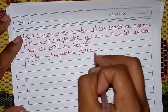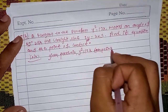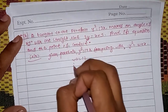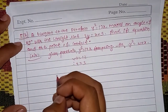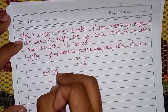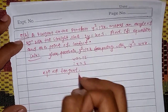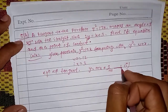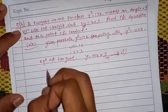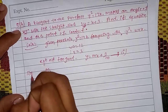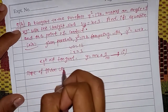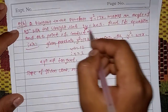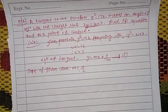Another problem: comparing the parabola with y²=4ax gives a=3. The equation of the tangent is y = mx + 3/m. The slope of the given line is m = 1/2. We need to find the tangent equations parallel and perpendicular to this line.